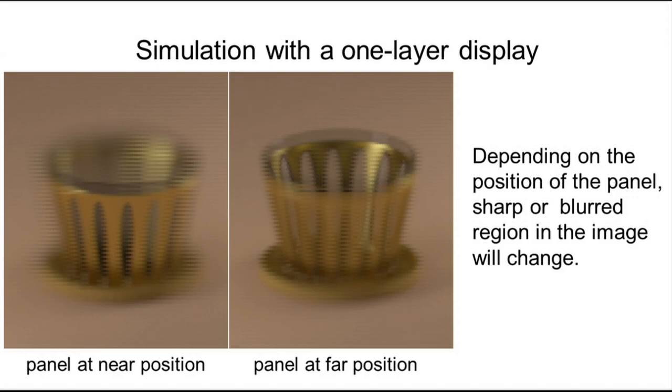Let me show some examples using numerical simulations. This is a result obtained using only a one-layer display. This kind of result can be obtained using an integral imaging system. In this kind of display, it's very important whether the position of the panel is very important. In the left figure, we have a panel in front of the object. And here we have a panel further away from the viewer. Depending on the position of the panel, we see sharp regions and broad regions.